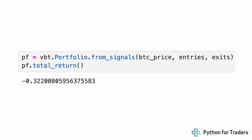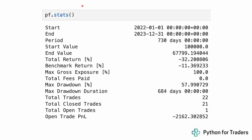Now that we have our entries and exits, we can calculate the strategy performance and run the backtest. We use vbt.Portfolio.from_signals, passing in our price series, entries, and exits to run the actual backtest. Right away, we can get the total return — and you can see that this strategy is not very good: it returned negative 32% over the two-year horizon. But we can get much more information than just the raw total return using pf.stats.